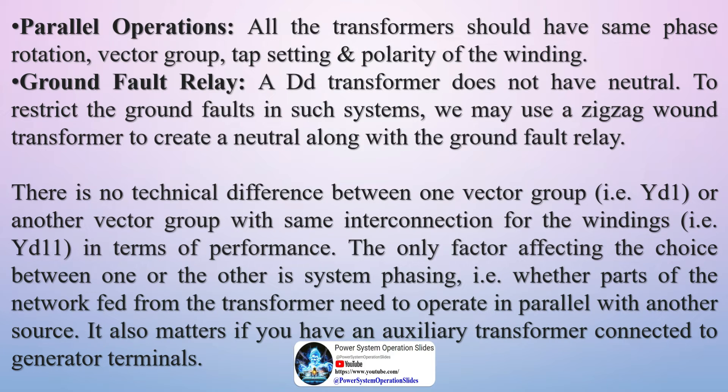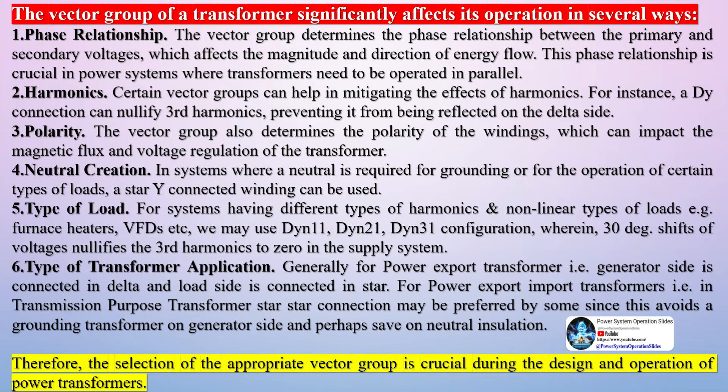There is no technical difference between one vector group, i.e. YD1, or another vector group with same interconnection for the windings, i.e. YD11, in terms of performance. The only factor affecting the choice between one or the other is system phasing, i.e. whether parts of the network fed from the transformer need to operate in parallel with another source. It also matters if you have an auxiliary transformer connected to generator terminals.